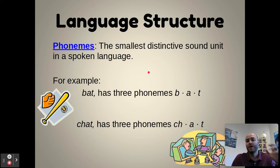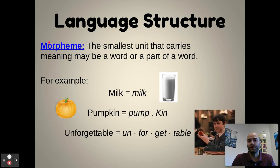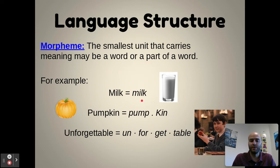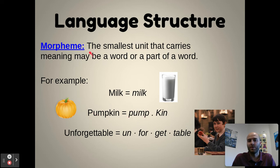As you combine phonemes together, you form morphemes — the smallest unit that carries meaning. Phonemes have no meaning on their own, but morphemes do. It may be a word or only part of a word, depending on whether it can change the meaning of a phrase. For example, milk itself is a morpheme — we can't break it down into any other meaningful parts. But pumpkin has two morphemes: pump and kin, because those two sections of the word have their own meaning.